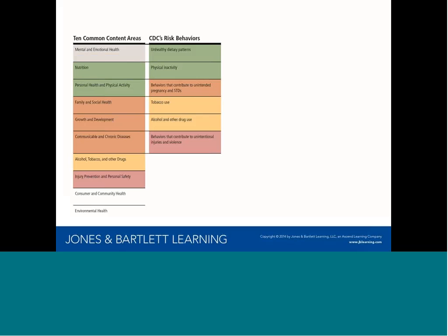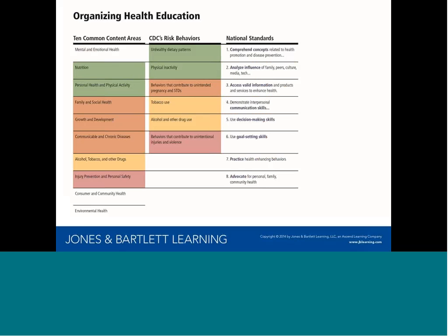So there you have it — health instruction in just four or five units, where teachers focus in on what is really important. Now let's look at how to include the National Health Education Standards. Here are the key standards words. The first standard deals with content, but the rest of them all address skills: analyzing skills, accessing skills, communication skills, decision-making skills, goal-setting skills, practice and behavior skills, and advocacy skills. Clearly, we must teach skills while addressing risk behaviors, and these skills need to be integrated into the four or five units we've talked about.